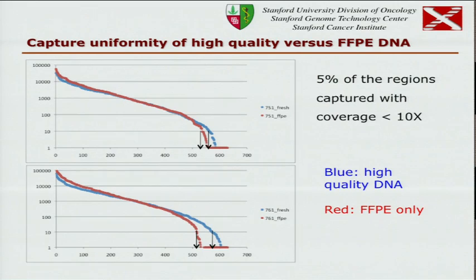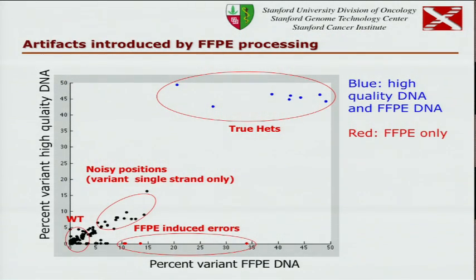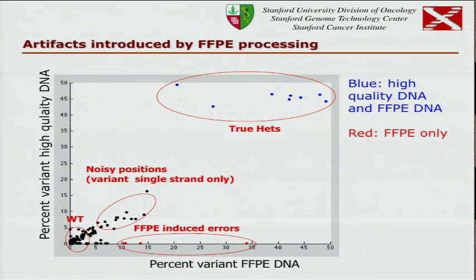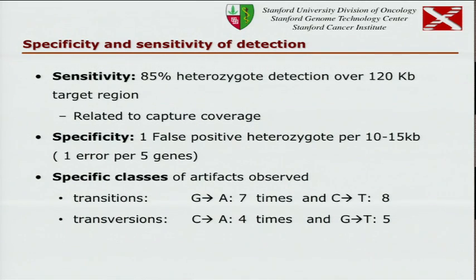For specificity, plotting the percent non-reference base in FFPE versus fresh DNA, there's a cluster of positions with high variant in both — those are the true heterozygotes. The vast majority of points show no variant. A few positions colored black have higher percent variant but typically with high strand bias, so those don't result in false positive calls. There's a handful where on both strands we see a variant base only in the FFPE and not in the normal — those are false positives. We find it's about 1 per 10 to 15 kb, or one error per 5 to 10 genes. That's reasonable.